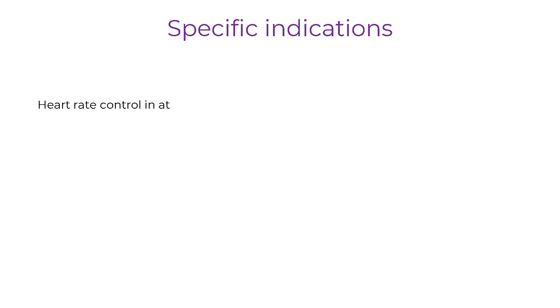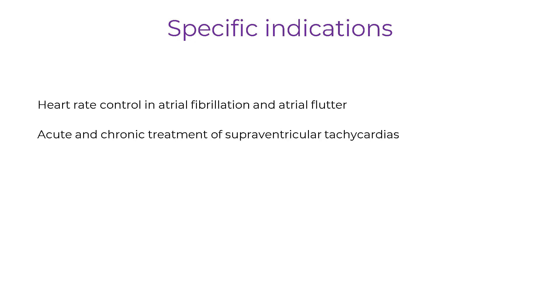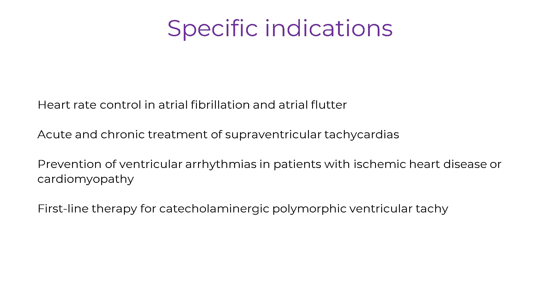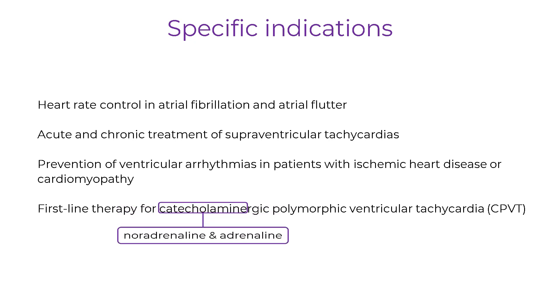Clinically, beta blockers are used in several important arrhythmia settings. They help control heart rate in atrial fibrillation and atrial flutter. They are effective in both acute and chronic management of supraventricular tachycardias. They reduce the risk of ventricular arrhythmias in patients with ischemic heart disease or cardiomyopathy. And they are first-line therapy for catecholaminergic polymorphic ventricular tachycardia, a rare inherited condition where arrhythmias are triggered by the catecholamines noradrenaline and adrenaline.